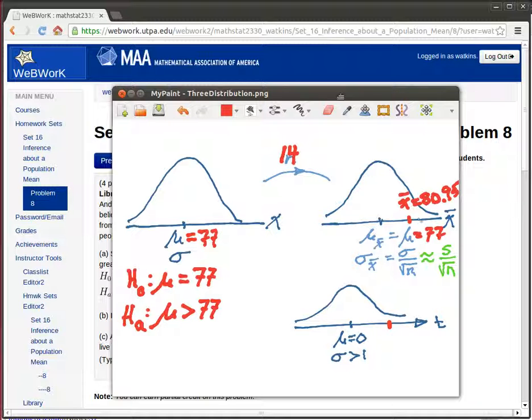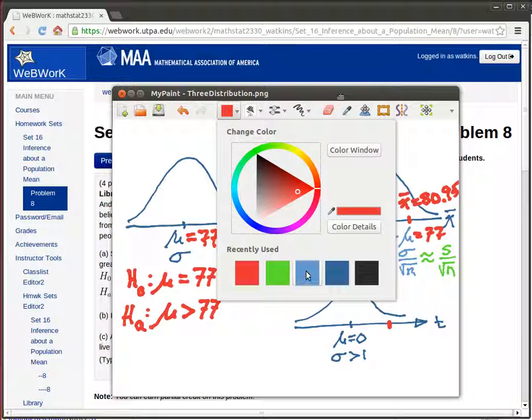And we can find that because that translation formula going from this distribution of sample means to the t-distribution is easy. We're just going to need to take, let me change the color here so we can kind of keep track of what we're doing.